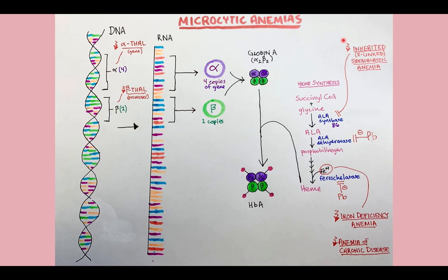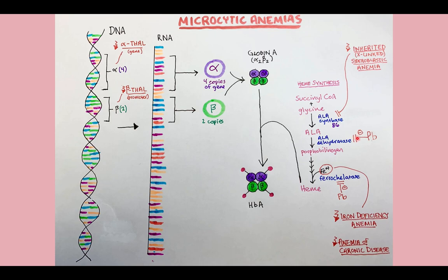Remember that to make hemoglobin we need to make globin and we need to make heme. You can have defects in the synthesis of globin — that's your thalassemias — or defects in heme synthesis, either due to a deficiency of iron, an issue with the enzymes from an inherited enzymatic deficiency, an issue with cofactors such as B6, or inhibition of those enzymes due to heavy metal toxicity.